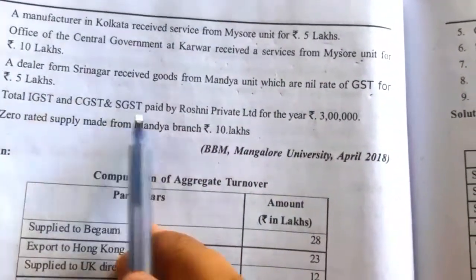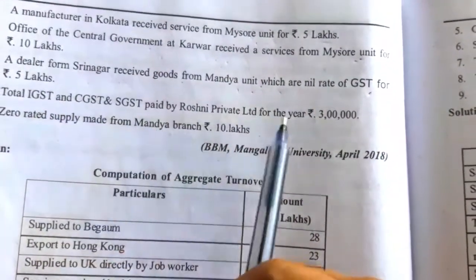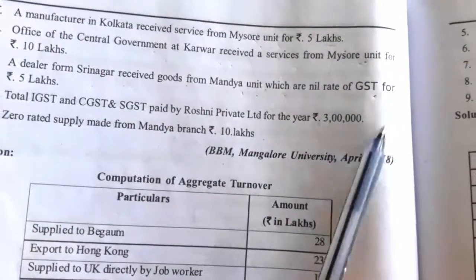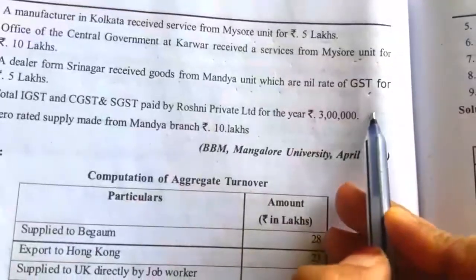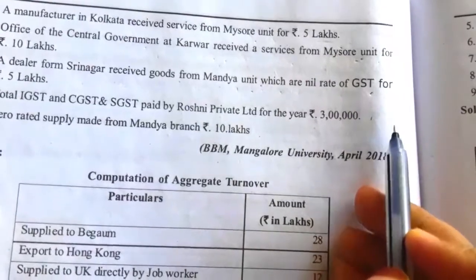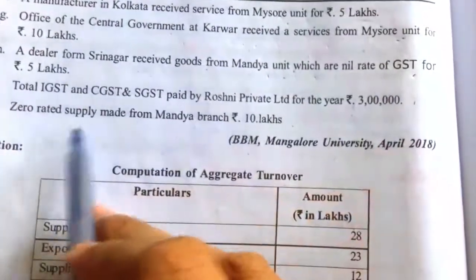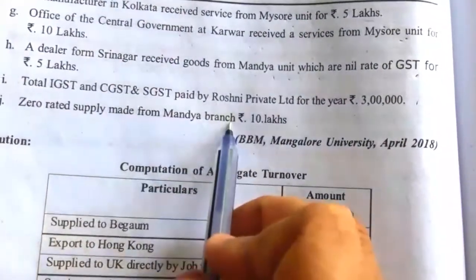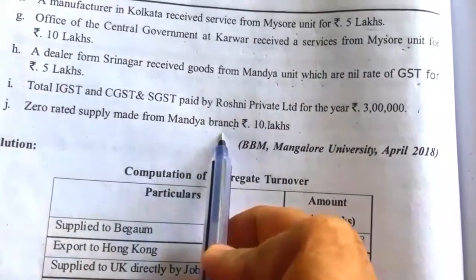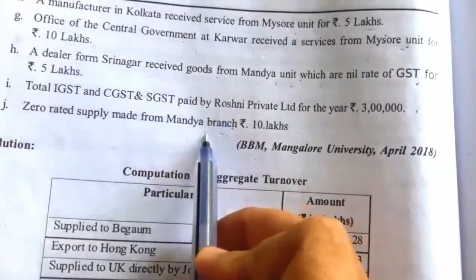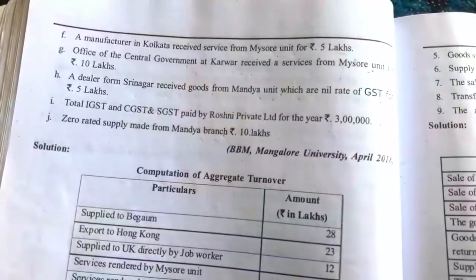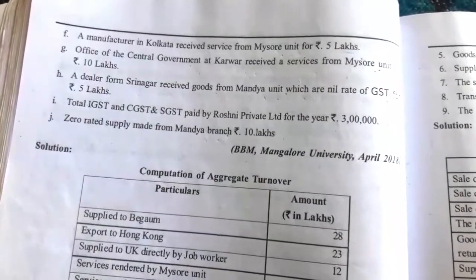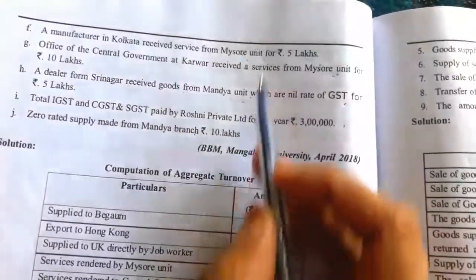Total IGST, CGST and SGST paid by Roshni Private Limited — Rs. 3 lakh we should not include; we have to write not a supply. Then, zero rated supply made from Mandia branch — Mandia branch applied the zero rated supply, Rs. 10 lakh — we have to include this for the aggregate turnover.